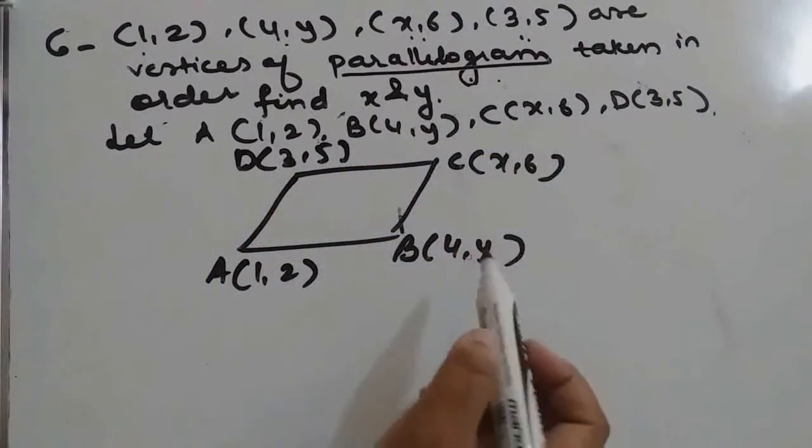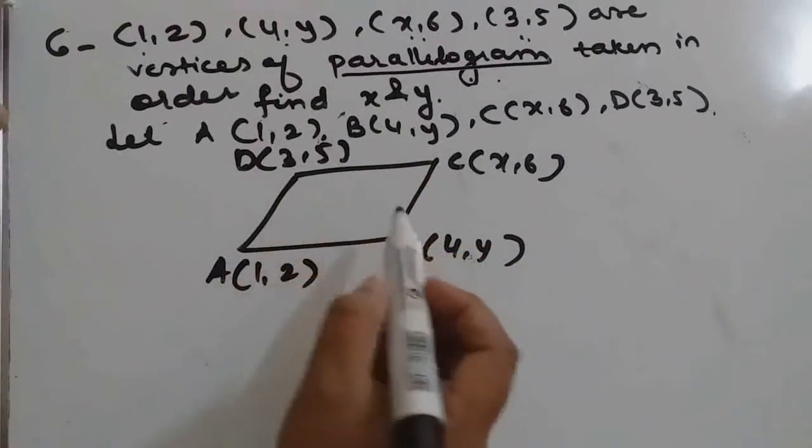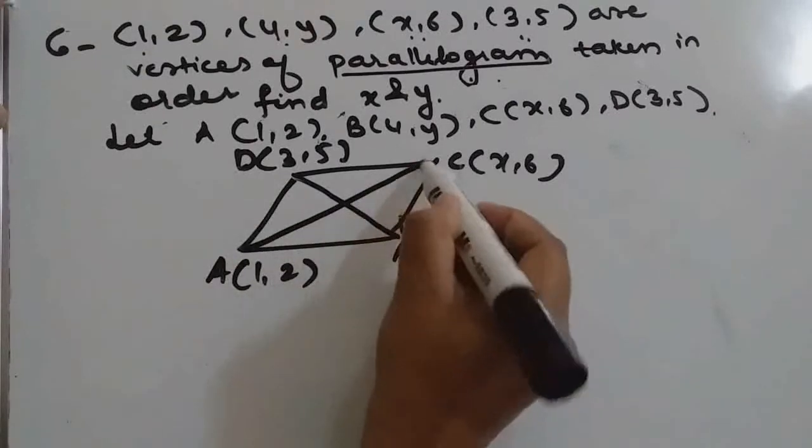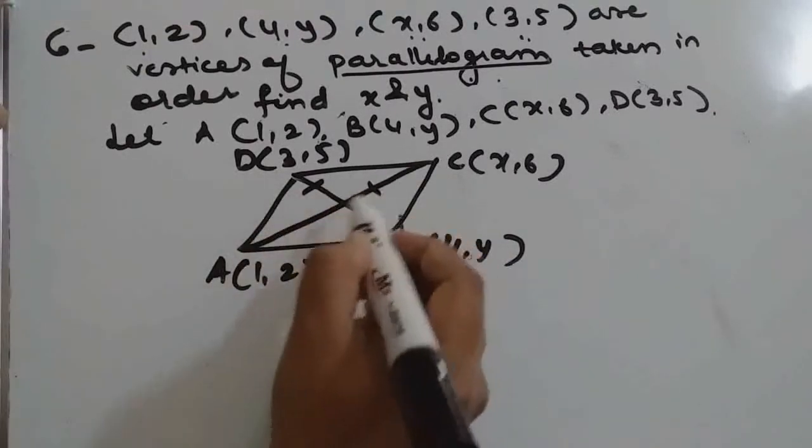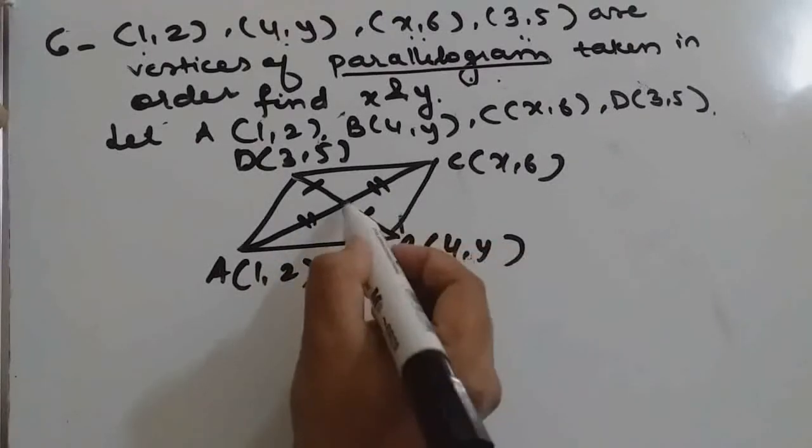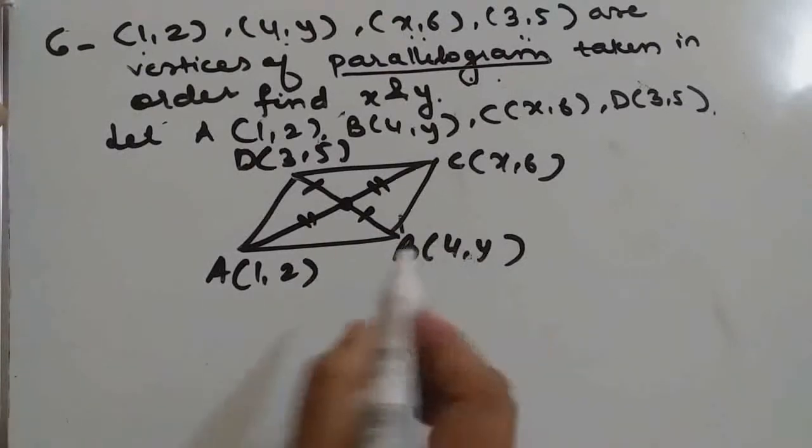Now, find x and y. We must know that in a parallelogram, diagonals bisect each other. Bisect each other means dividing into 2 equal parts. That means they have a common midpoint.